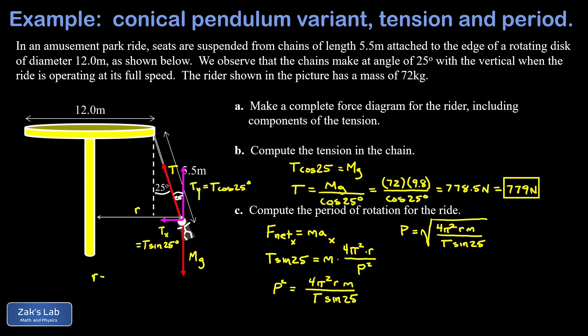I'll just write that here: I get 6 plus 5.5 sine of 25, and that turns out to be about 8.32 meters. Now we're ready to plug everything in to our period formula. We get 4 pi squared times our radius of curvature for the circular path of this rider, which is 8.32 meters, times the mass of the rider, 72 kilograms.